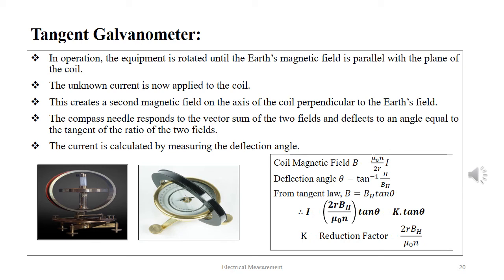In operation, the equipment is rotated until the Earth's magnetic field is parallel with the plane of the coil. The unknown current is applied to the coil, creating a second magnetic field on the axis of the coil perpendicular to the Earth's field. The compass needle responds to the vector sum of the two fields and deflects to an angle equal to the tangent of the ratio of the two fields. The current is calculated by measuring the deflection angle. The coil magnetic field B = (mu_0·N)/(2R) × I, and the deflection angle theta = tan⁻¹(B/BH). From the tangent law, B = BH·tan(theta), giving I = (2R·BH)/(mu_0·N) = K·tan(theta), where K = (2R·BH)/(mu_0·N) is known as the reduction factor.